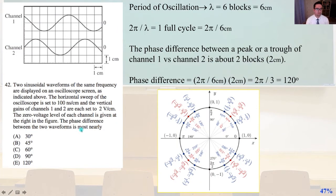Problem 42. Two sine waveforms of the same frequency are displayed on an oscilloscope screen as indicated above. The horizontal sweep of the oscilloscope is set to 100 nanoseconds per centimeter, and the vertical gains of channels 1 and 2 are each set to 2 volts per centimeter. The zero voltage level of each channel is given at the right in the figure.